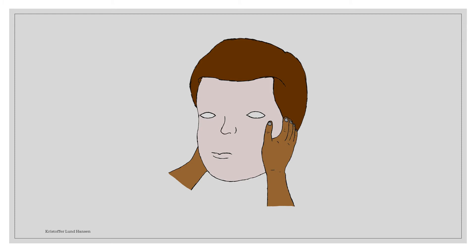Now, there are one of two things that you will observe: either a normal or an abnormal result. In a normal result, the eyes of the patient will never let go of your nose as you turn the head — this means that the test is negative for that side. In an abnormal result, however, just as you move the head, the eyes will stay fixed and move with the head. They will let go of your nose just as you move the head. The test is then positive for this side.